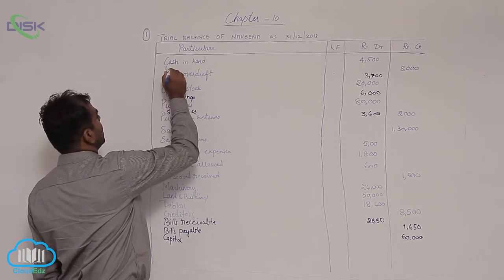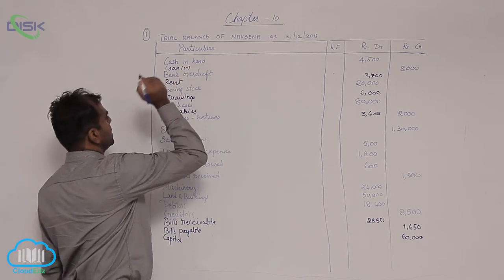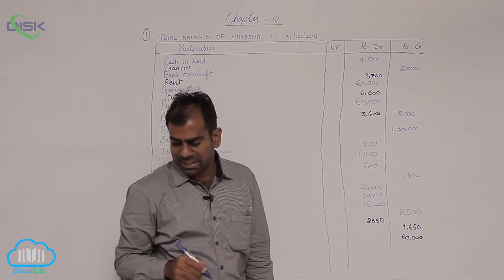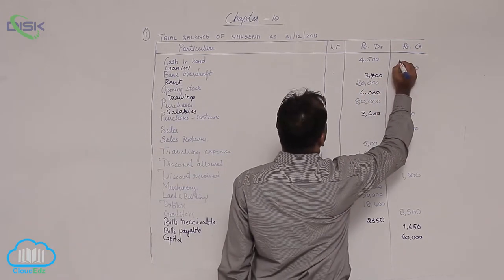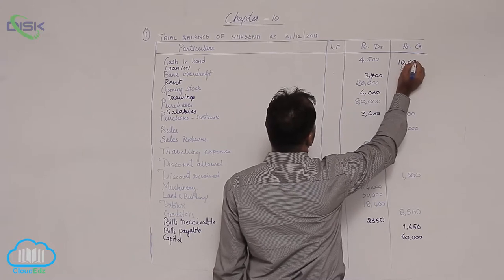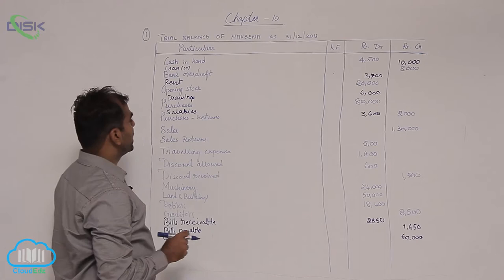Because it is given as credit, I am taking it as credit. Otherwise, when simply loan is given, you will also take it as credit balance only. The last one is interest on loan. Interest on loan is an expense.